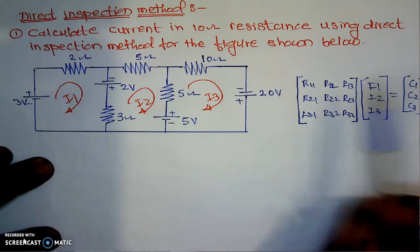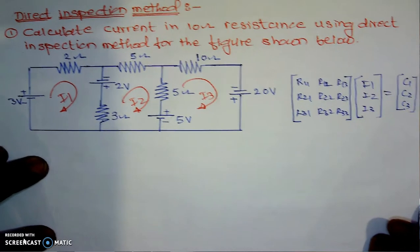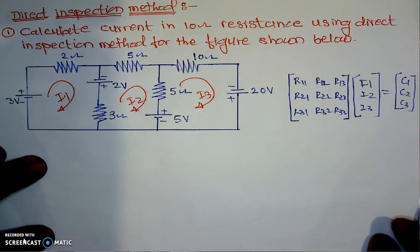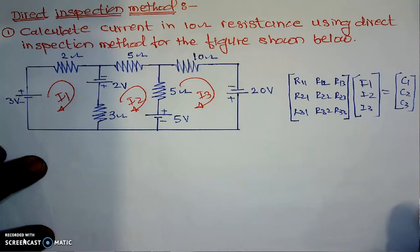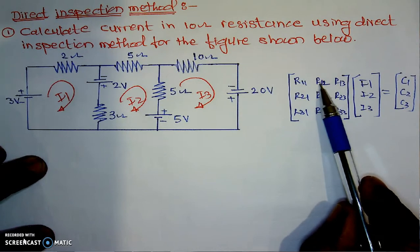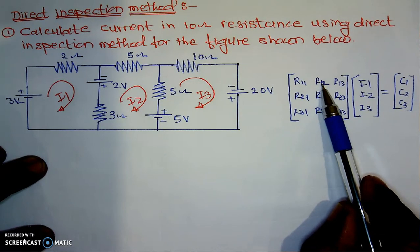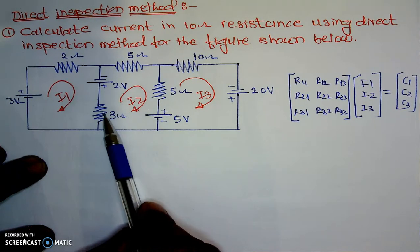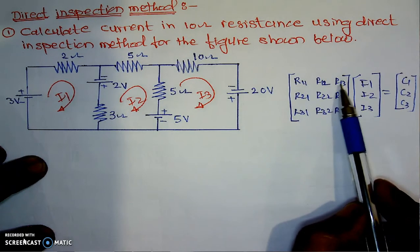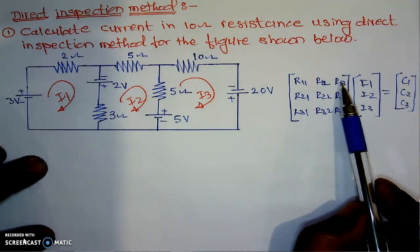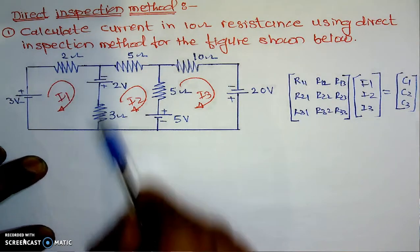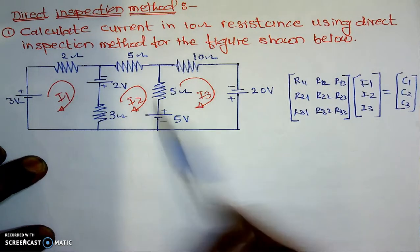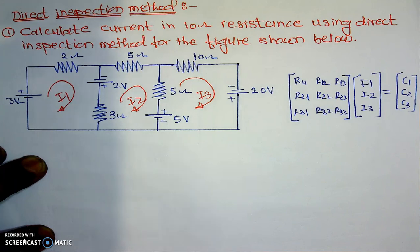R11 is the resistance of the first loop. R12 is the resistance common to the first and second loop — the common resistance is 3. R13 is the resistance common to the first and third loop; since there is no common element, its value should be 0, and so on.